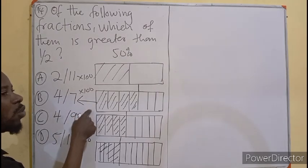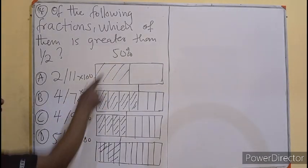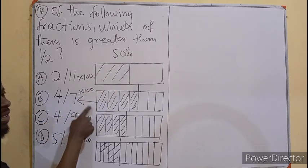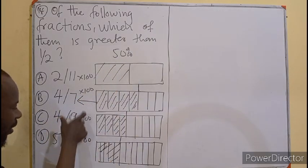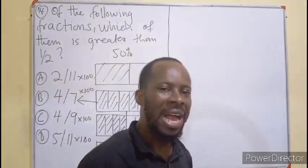Then obviously you have this to be bigger than this. The rest are going to be less than 50. This is going to be 57%. Then you will be able to know which of the fractions is bigger than the other.